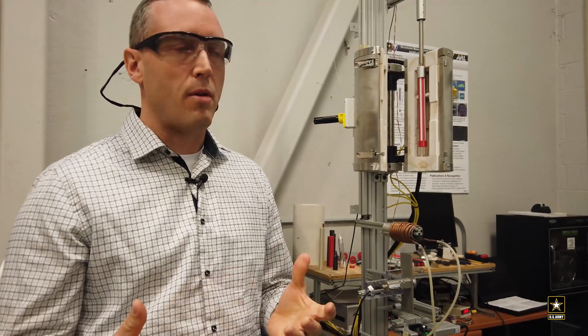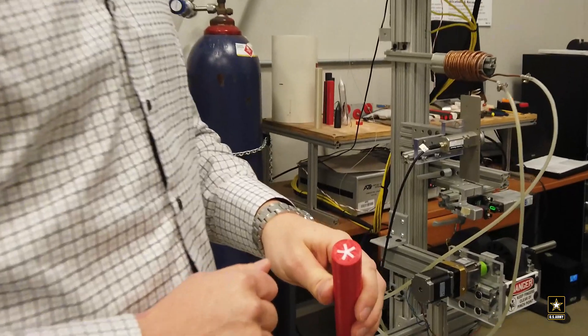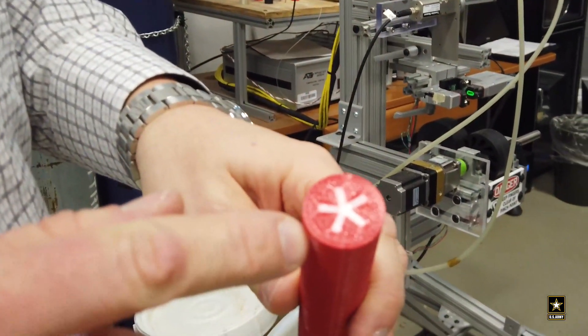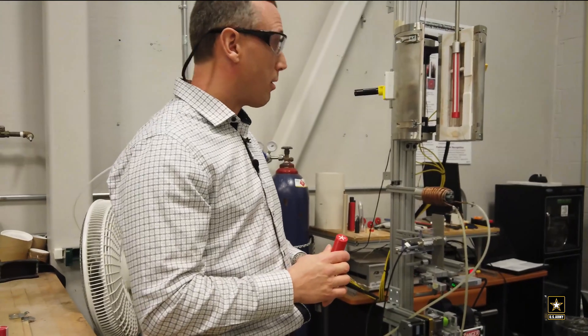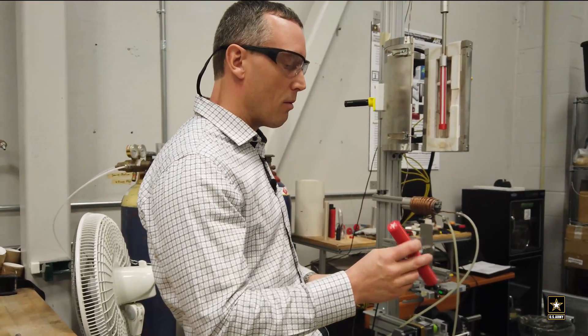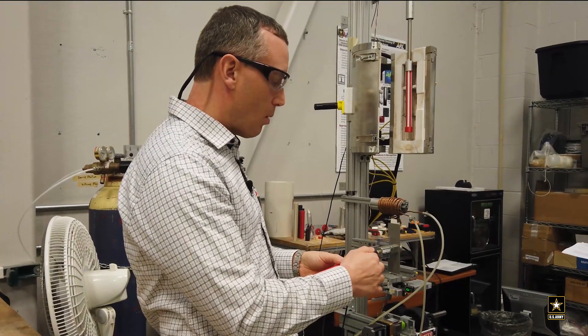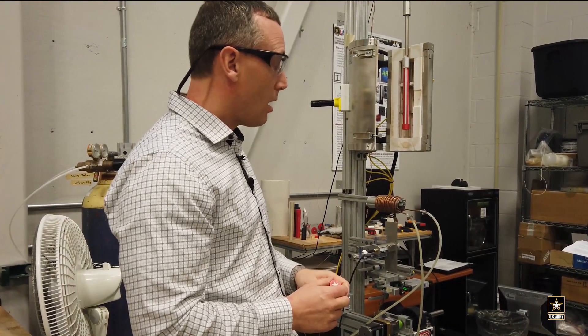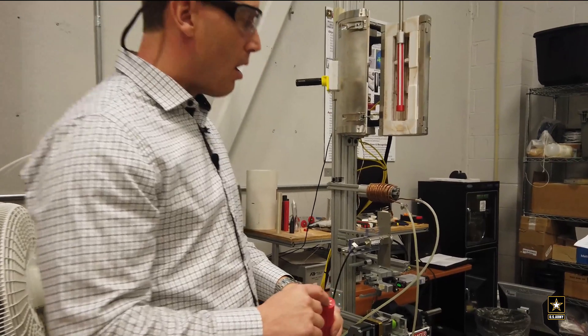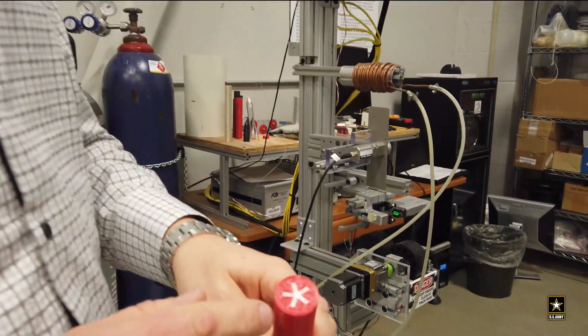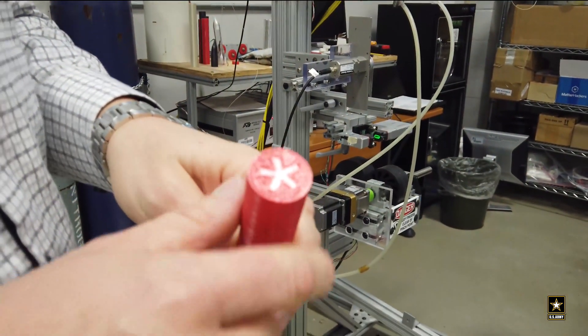What we've done is we've combined two different polymers together into a single filament and each of those polymers has unique characteristics that are useful for printing and building strength. What we do is we first create on a 3D printer this solid body here which is called a preform. If you look at this preform you see there's a white part and a red part. The white part is a higher temperature polymer called polycarbonate. The red part is a lower temperature polymer called ABS.